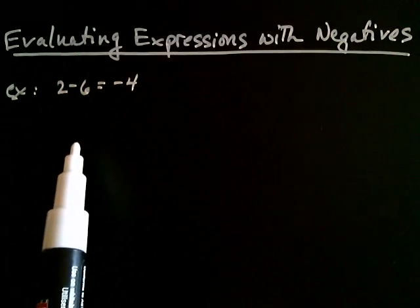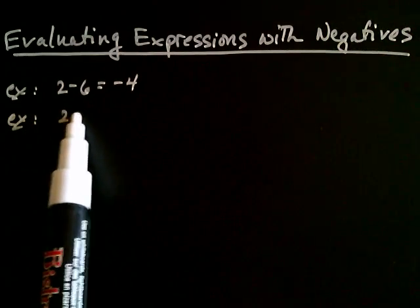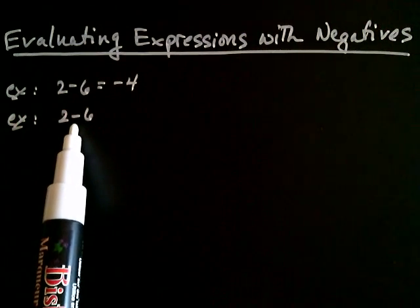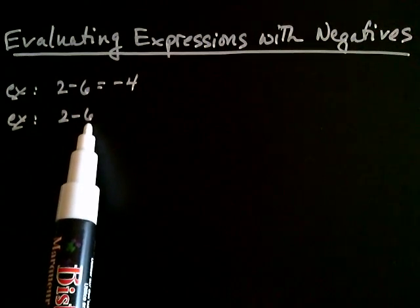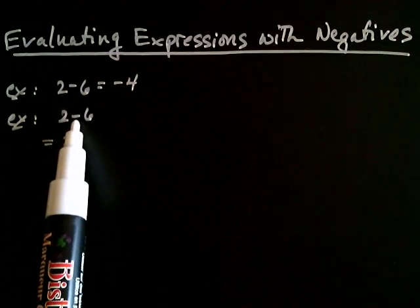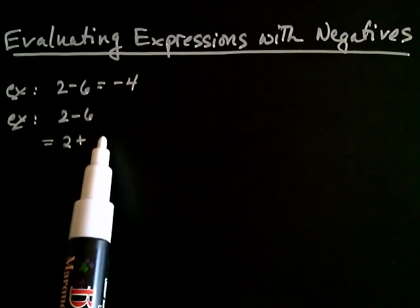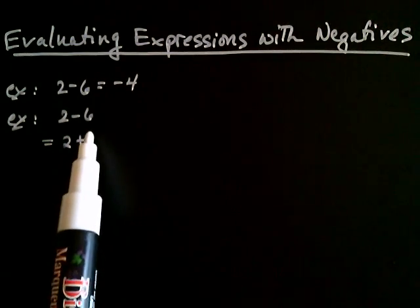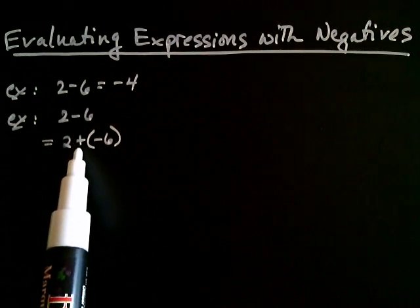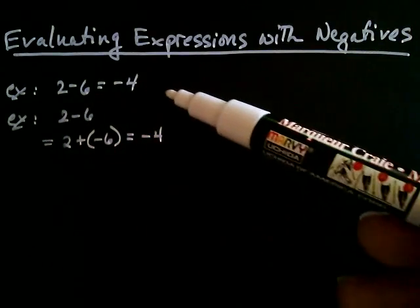It turns out there's another way of viewing subtraction. You can think about 2 minus 6 as follows: convert subtraction to addition and take the opposite of what follows. So 2 remains the same, subtraction becomes addition, and the opposite of 6 is negative 6. That becomes 2 plus negative 6, which also gives you negative 4.